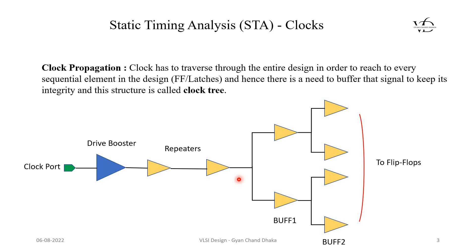Now let's see how clock propagation happens in our design. This is our clock port, which can be an external crystal oscillator pin, an internal PLL pin, or an internal on-chip RC oscillator pin. From this clock pin we will have some drive strength boosters which will boost the drive strength of the clock signal, then we will have a few repeaters and some buffers, and then the output of these buffers will go to the flip-flops or each sequential element present in the design.